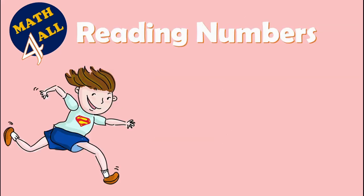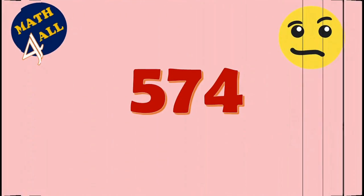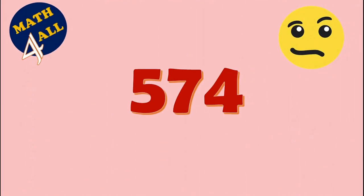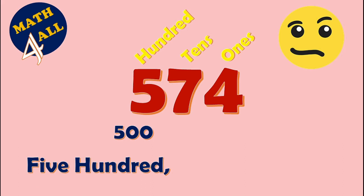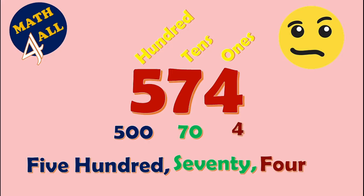Now we are ready. Okay, again — how to read this number? First, you have to know the place value and the value of each digit. Here: hundreds, tens, and ones. The first digit, five, in the hundreds place means five hundred. Seven in the tens place means seventy. And four in the ones place means just four.